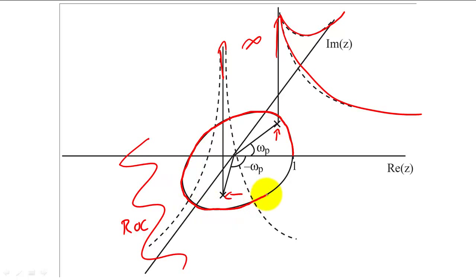As you might guess, the magnitude of the frequency response will be greatest where the poles are closest to the unit circle. In this example, the unit circle is closest to the poles here and here.